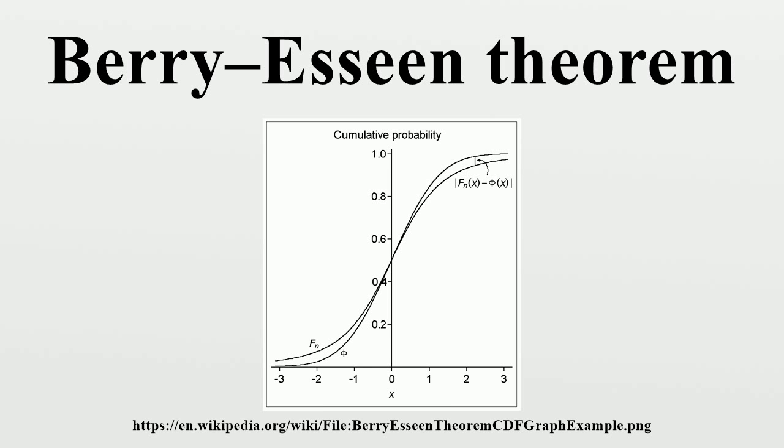in 1941, Andrew C. Berry proved that for all n there exists an absolute constant c1 such that the inequality holds independently. In 1942, Carl Gustav Esseen proved that for all n there exists an absolute constant c0 such that the inequality holds, where it is easy